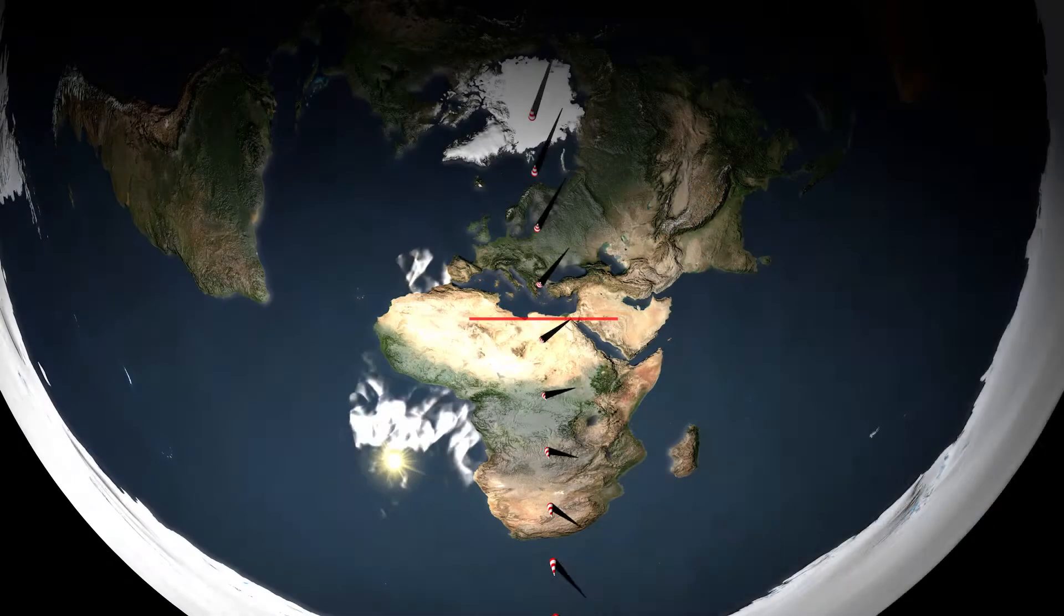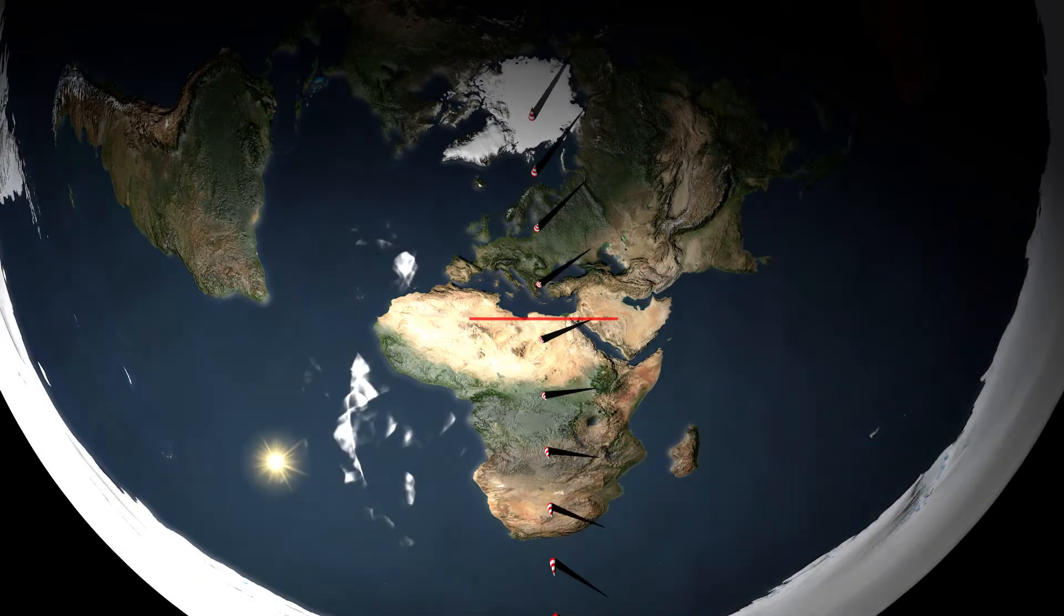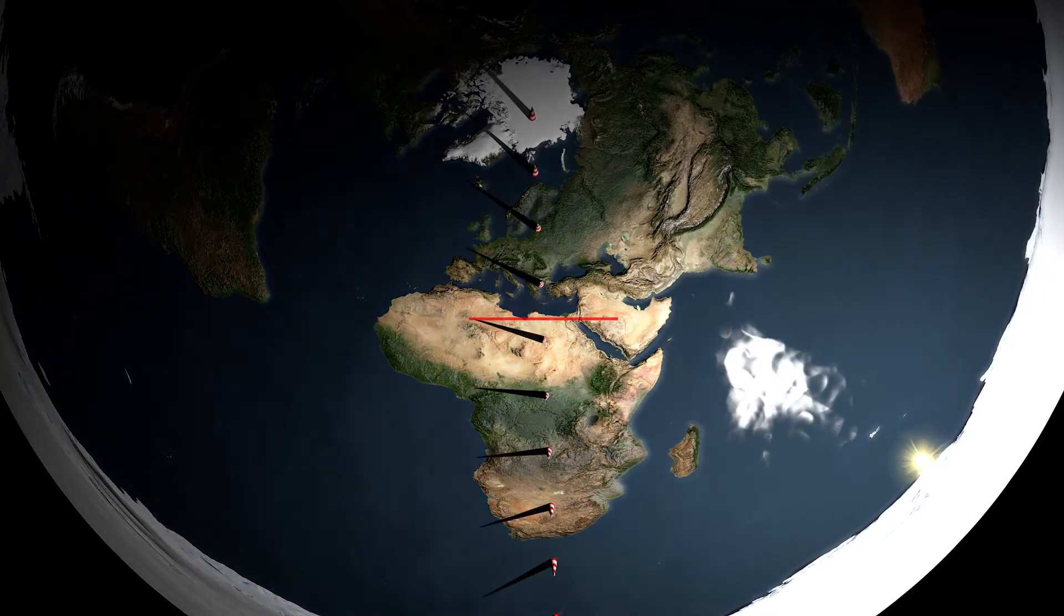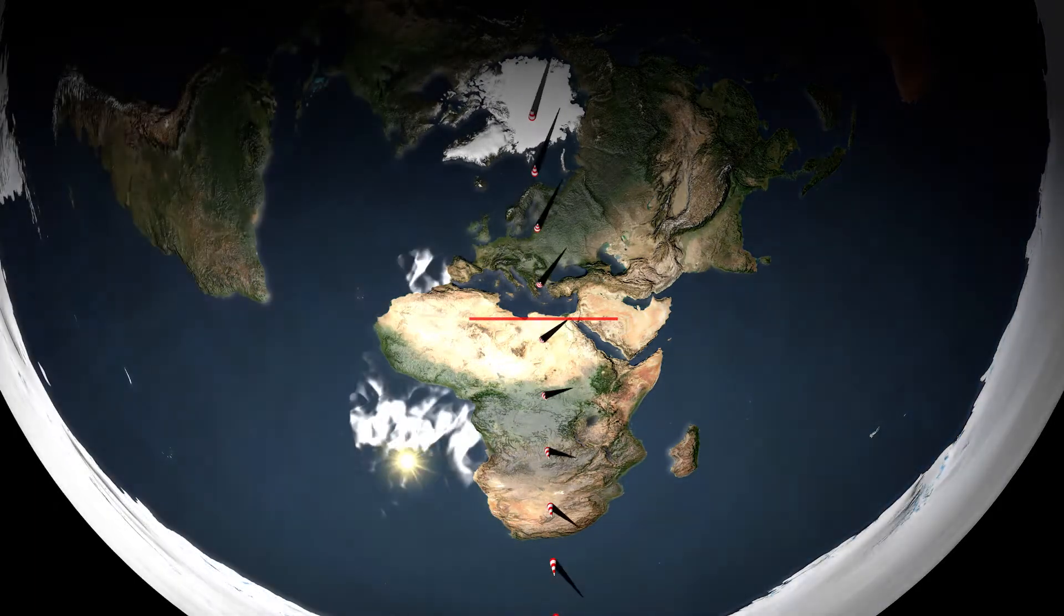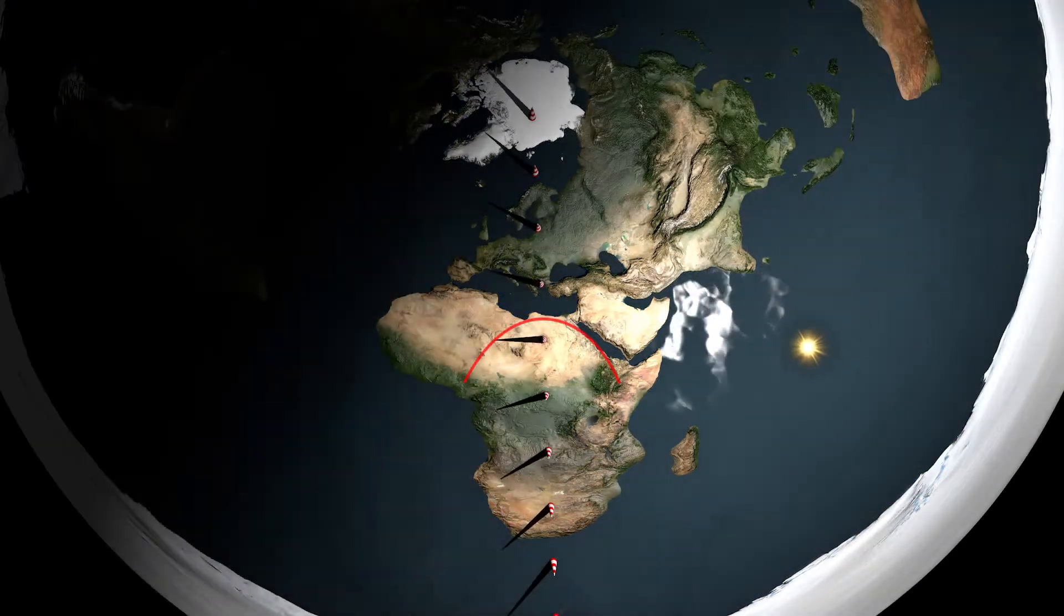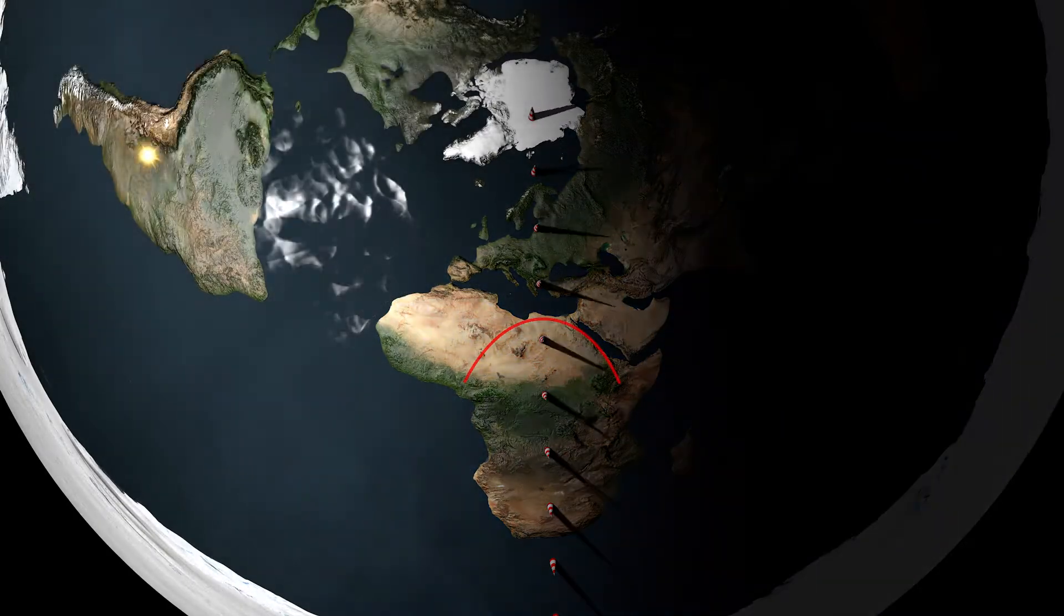But in order for shadows to move in a straight line, the light source also has to move in a straight line. So when Flat Earthers say that the Sun moves in circles, they have a big problem.